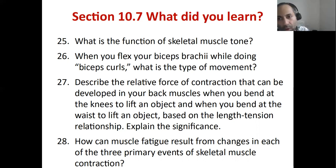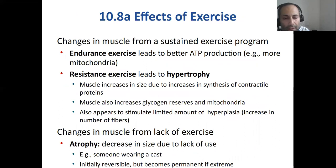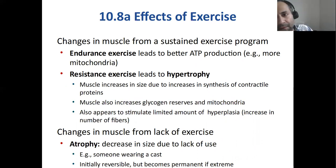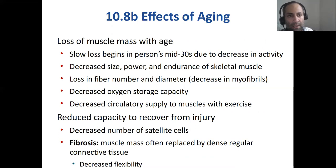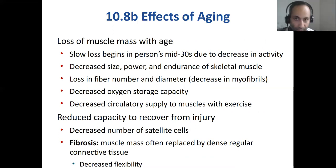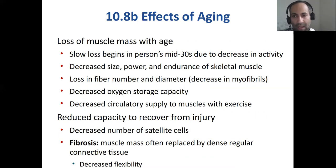Muscle fatigue can result from changes in the three primary events of skeletal muscle contraction because you lose calcium, you lose ATP, and you lose oxygen from myoglobin. Hypertrophy: when you exercise and lift weights, your individual muscle fibers become thicker, stronger, and larger. Atrophy is the exact opposite — when you stop working out or have cancer or a wasting disease, your muscles break down and become smaller. We start losing muscle mass as early as our mid-30s. With time, the endurance and power of skeletal muscle decreases, blood flow to muscles goes down, and muscle pains, ruptures, sprains, and strains all become more common unless you keep up with an exercise regimen.